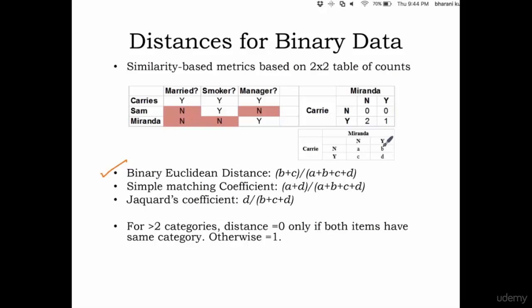B plus C divided by A plus B plus C plus D. So you're looking into those instances where both Carrie and Miranda are different. So this B is Carrie No, Miranda Yes. And in this instance you have Carrie Yes and Miranda No, which is C. So what is this capturing? This is capturing the dissimilarity between two records. So this measure is capturing the degree of dissimilarity.